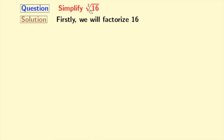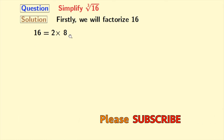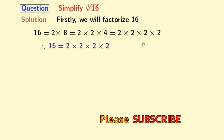At first, we will factorize 16. Note that 16 is an even number, so it will be divisible by 2, and we have 16 equal to 2 times 8. We know that 8 is equal to 2 times 4, and 4 is equal to 2 times 2. So finally, we have 16 equal to 2 times 2 times 2 times 2. This is the prime factorization of 16.